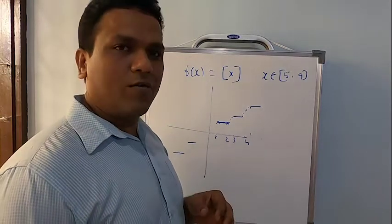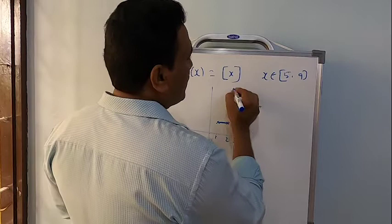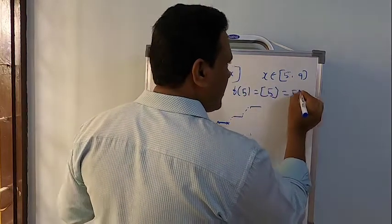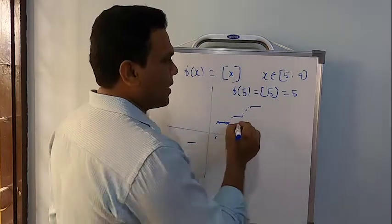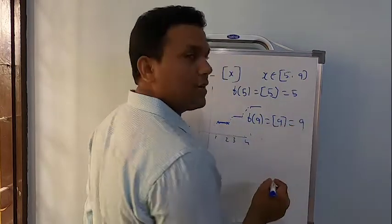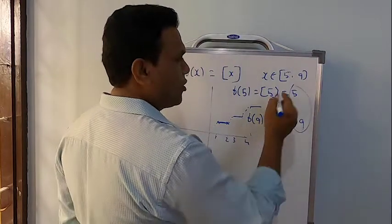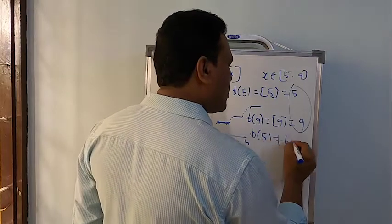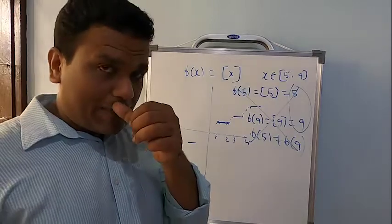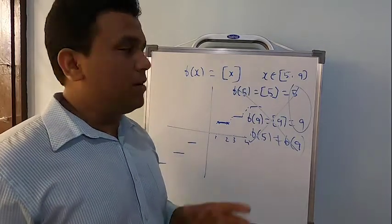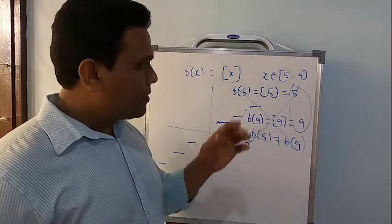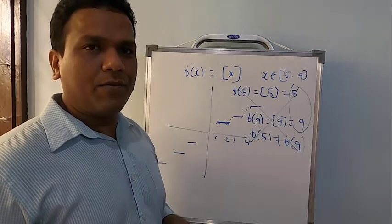Still, I will help you in finding whether f(a) equals f(b). f(a) means f(5): greatest integer of 5 will be 5. And f(9): greatest integer of 9 will be equal to 9. You notice they are not equal — f(5) is not equal to f(9). Actually there's no need to check this because it's not continuous, and once it's not continuous it's not differentiable.